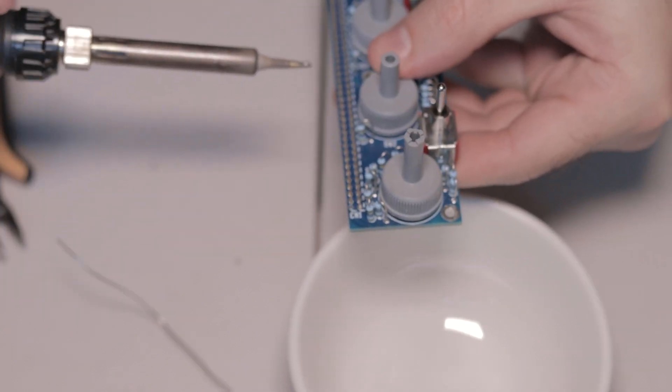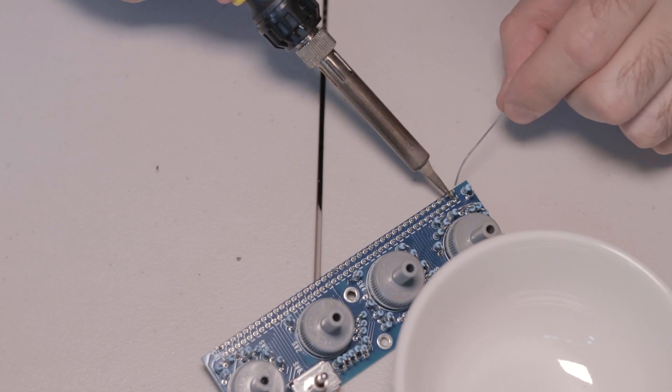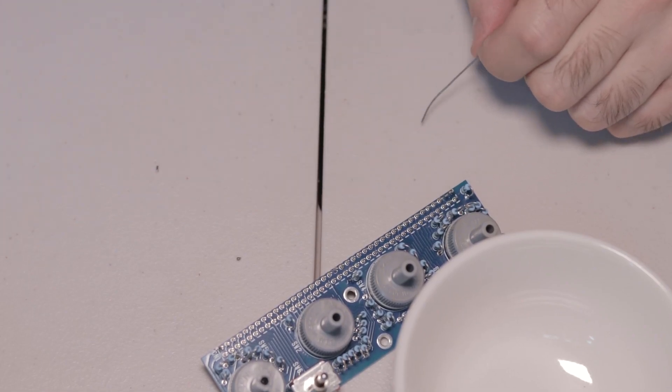And then the next component is this 2x40 pins header, and to get this to work, what I did was solder one of the end legs, one of the other end legs, and then the middle leg, to hold it really flat on the board.